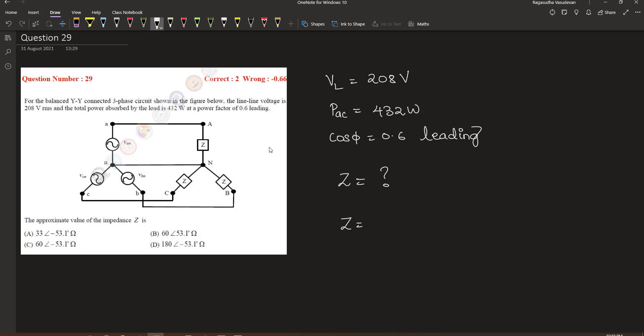The value of impedance is equal to phase voltage divided by phase current, where phase voltage is equal to the line voltage 208V divided by root 3, divided by the phase current. Now let us find out the phase current.